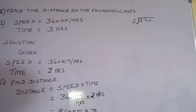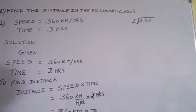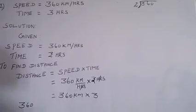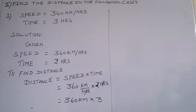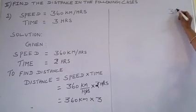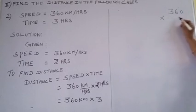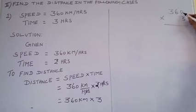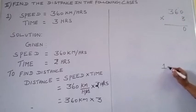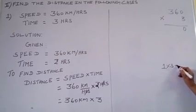So we need to multiply the 360 km by 3. So 360 multiplied by 3. So any number multiplied by 0, we get 0.